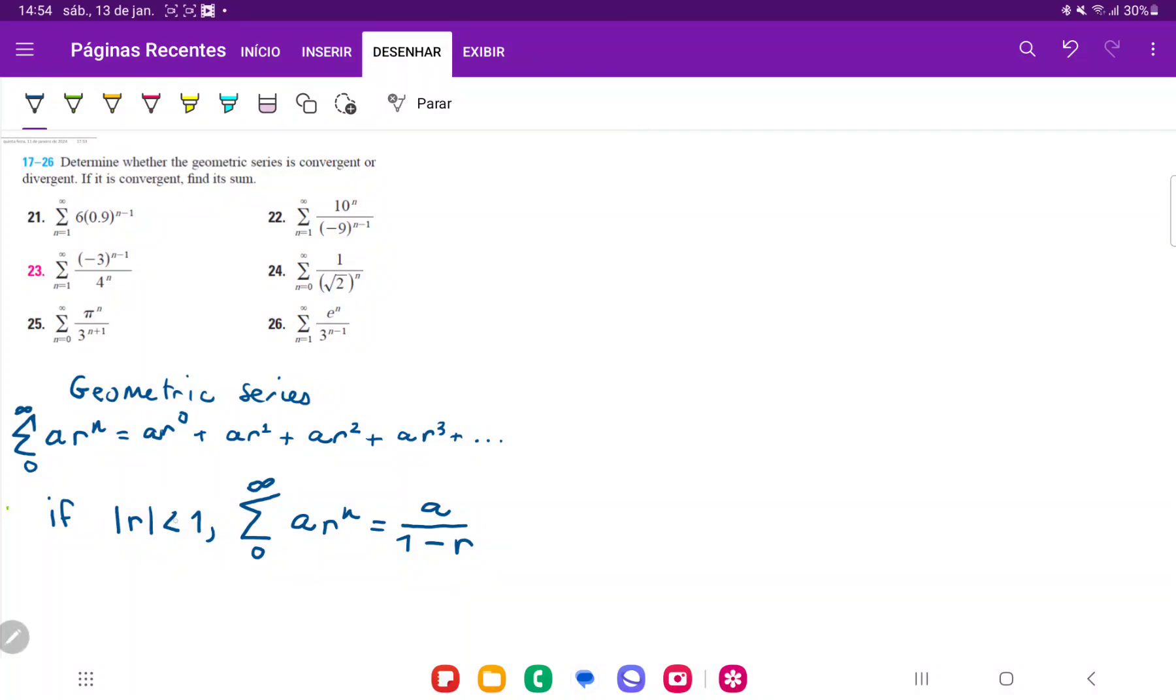A geometric series is convergent if the absolute value of its ratio, the thing that's being raised to a power, is less than 1.